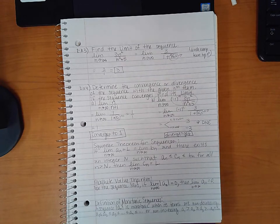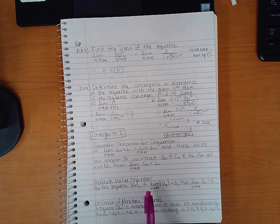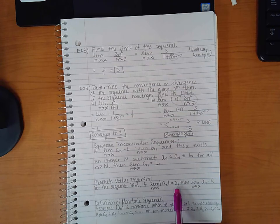Now here we go, the absolute value theorem for the sequence a_n. If the limit of the absolute value of the nth term equals zero, then the limit of a_n also equals zero.